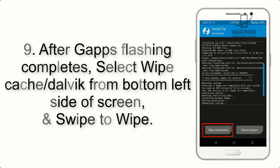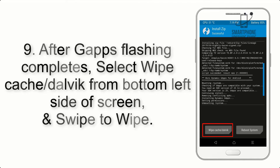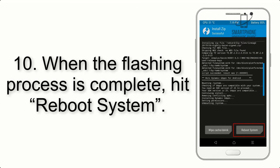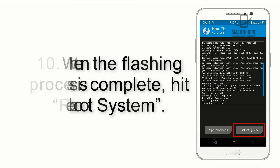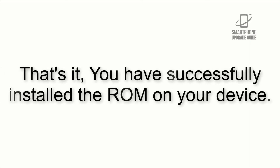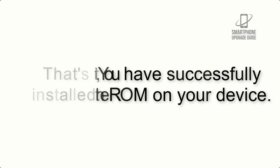Step 9: After GApps flashing completes, select Wipe Cache and Dalvik from the bottom left side of the screen and swipe to wipe. Step 10: When the flashing process is complete, hit Reboot System. That's it — you have successfully installed the ROM on your device.